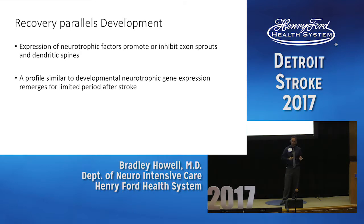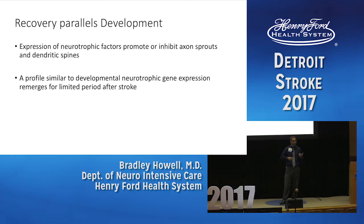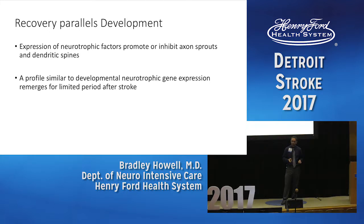The mechanism underlying neurodevelopment involves a timely and perfectly orchestrated balance of neurotrophic factors — those promoting axonal sprouting and elaboration of dendritic spines to facilitate synaptic connections, balanced with those that inhibit the process so it's not overdone. Interestingly, in animal models, after stroke there is an emergence of a similar profile of neurotrophic factors.